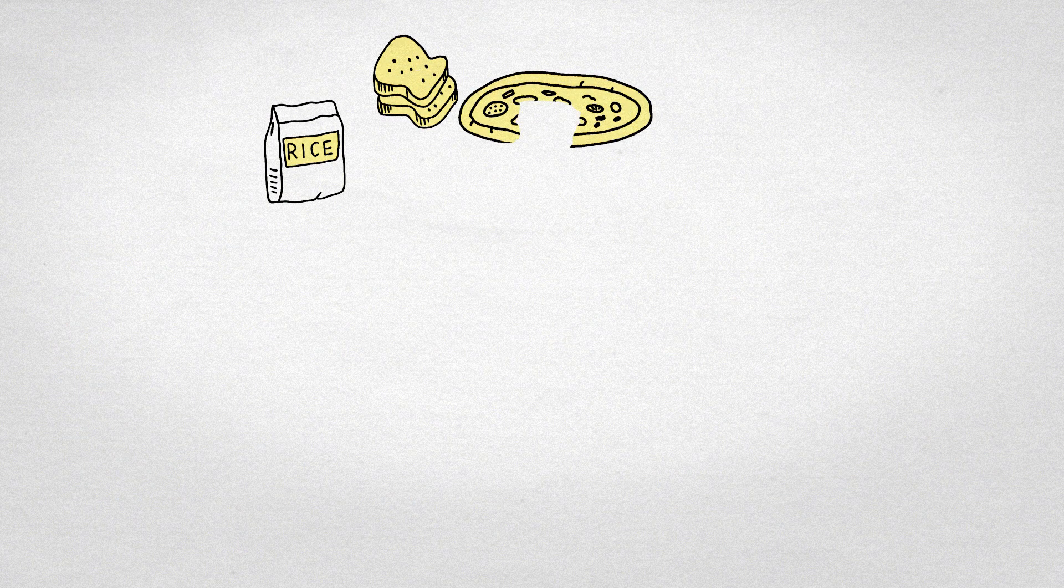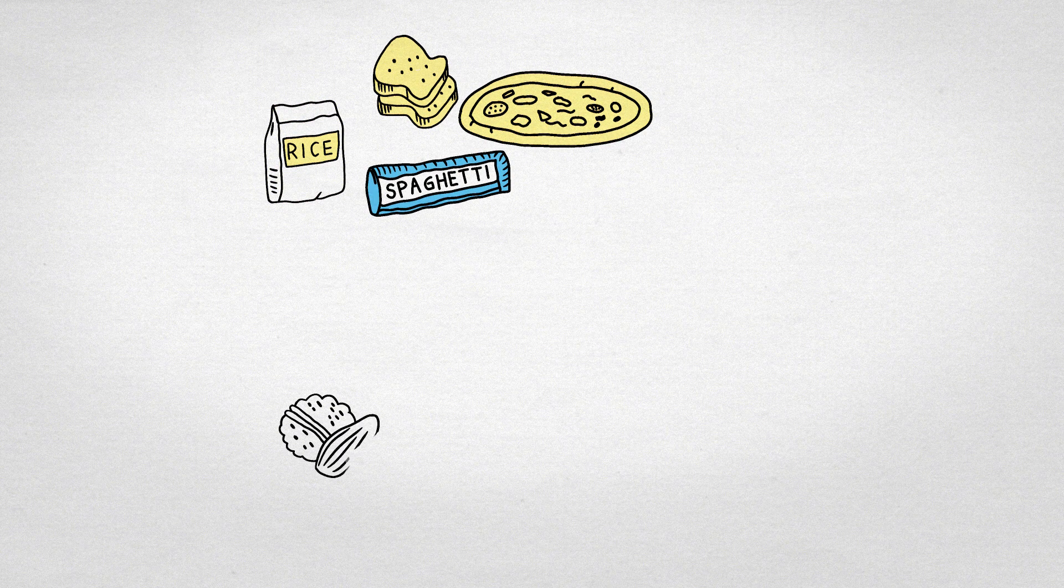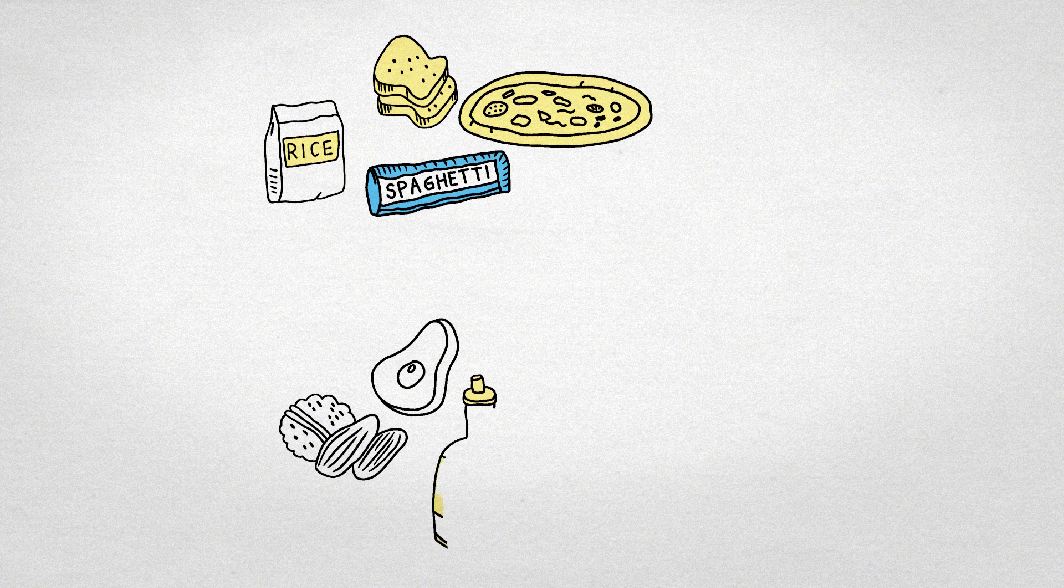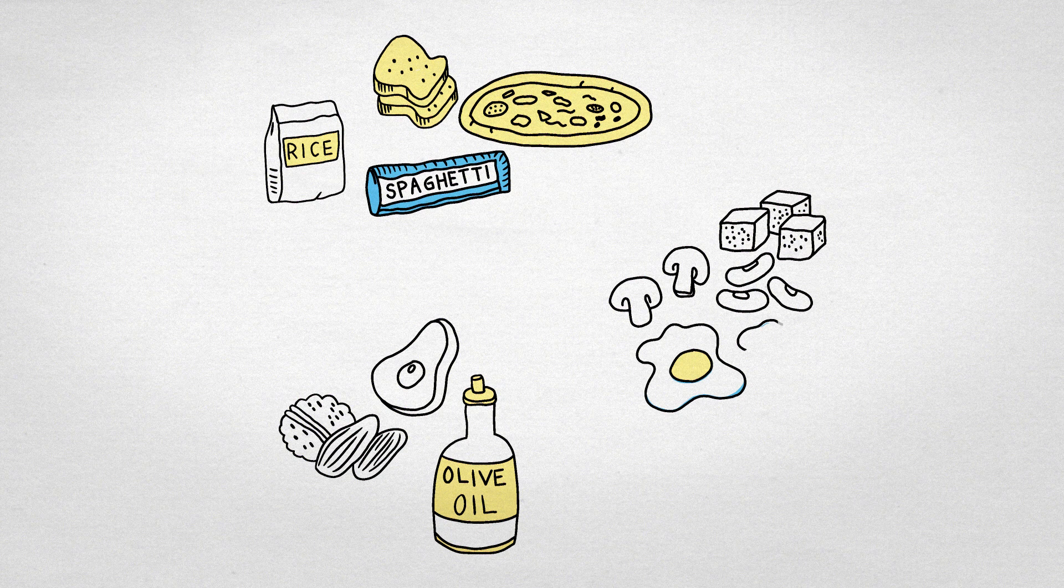When carbohydrates are turned into glucose, they are the main source of energy for the brain and the body. Fats provide energy for growth and physical activity. Proteins help to grow and repair body tissues.